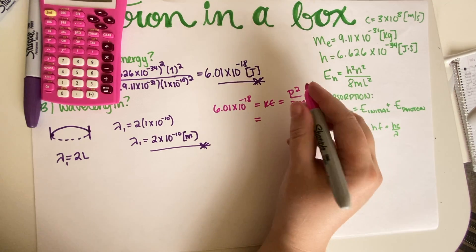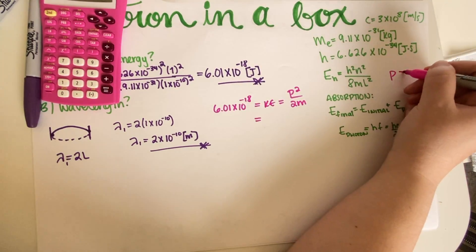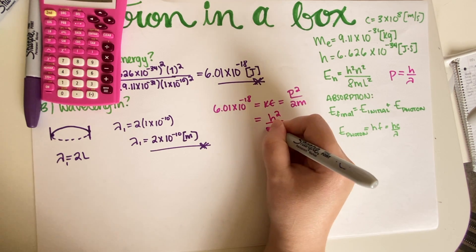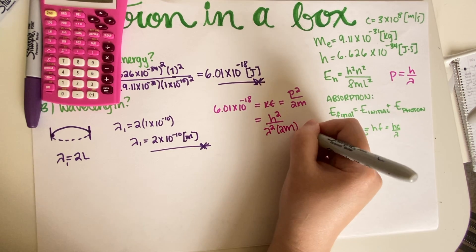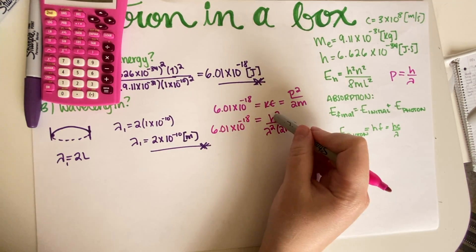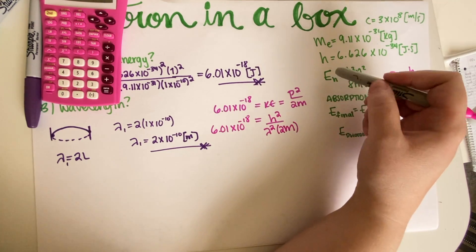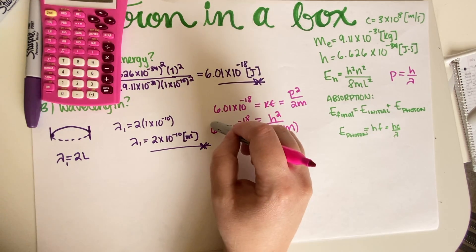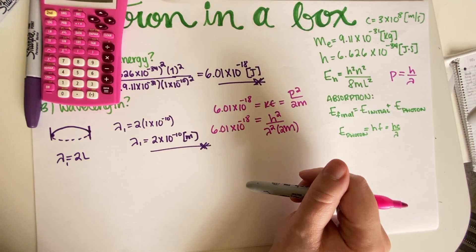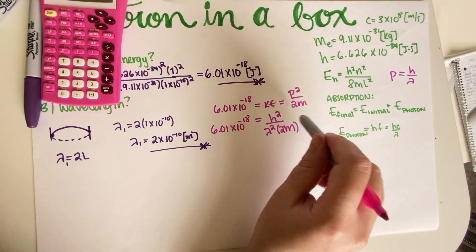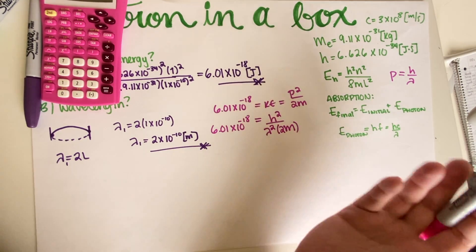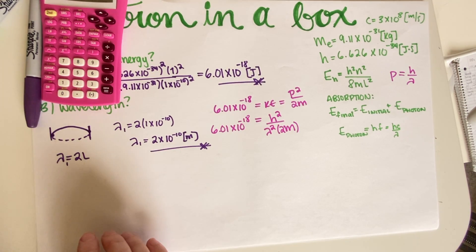Since p = h/lambda, kinetic energy becomes h²/(lambda² × 2m) = E₁. You can rearrange: put E₁ on one side, isolate lambda², take the square root, and you get the same answer. It's just an algebraic route, but remembering your standing waves is more useful.